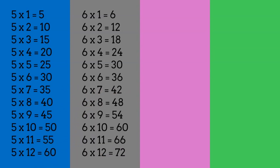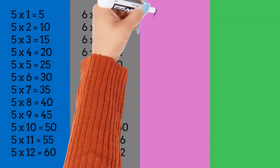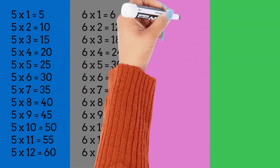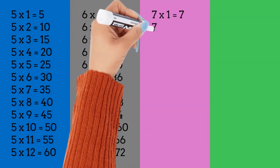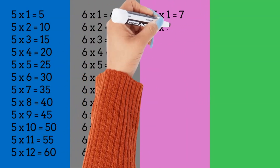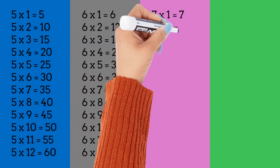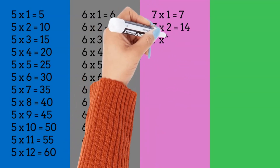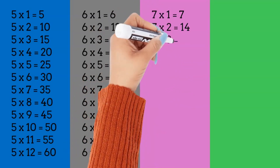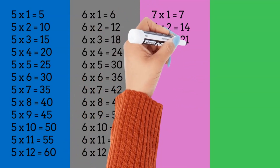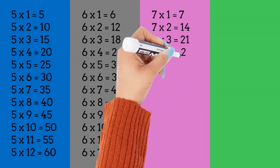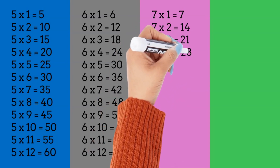Times table 7. 7 times 1 is equal to 7. 7 times 2 is equal to 14. 7 times 3 is equal to 21. 7 times 4 is equal to 28.